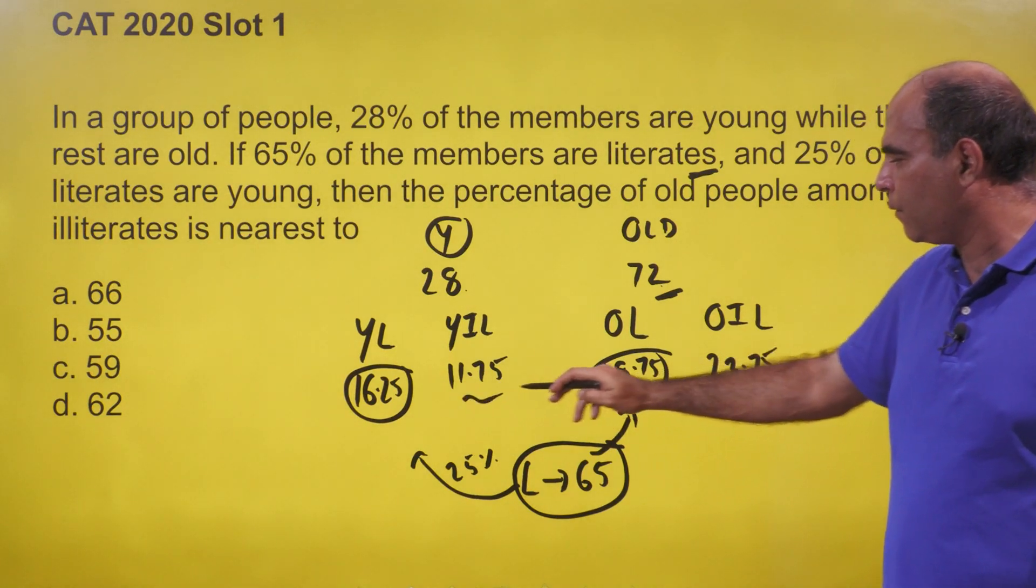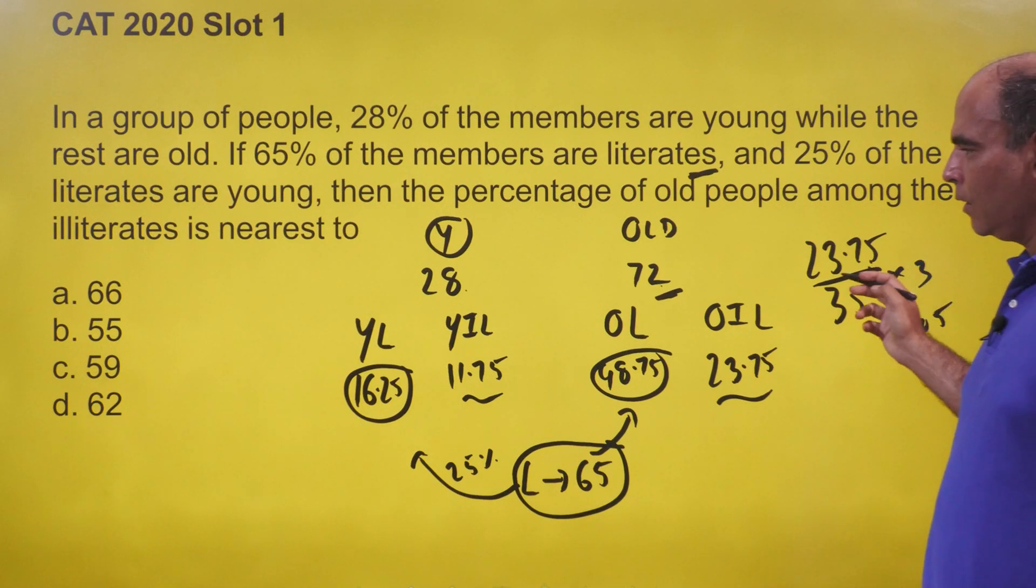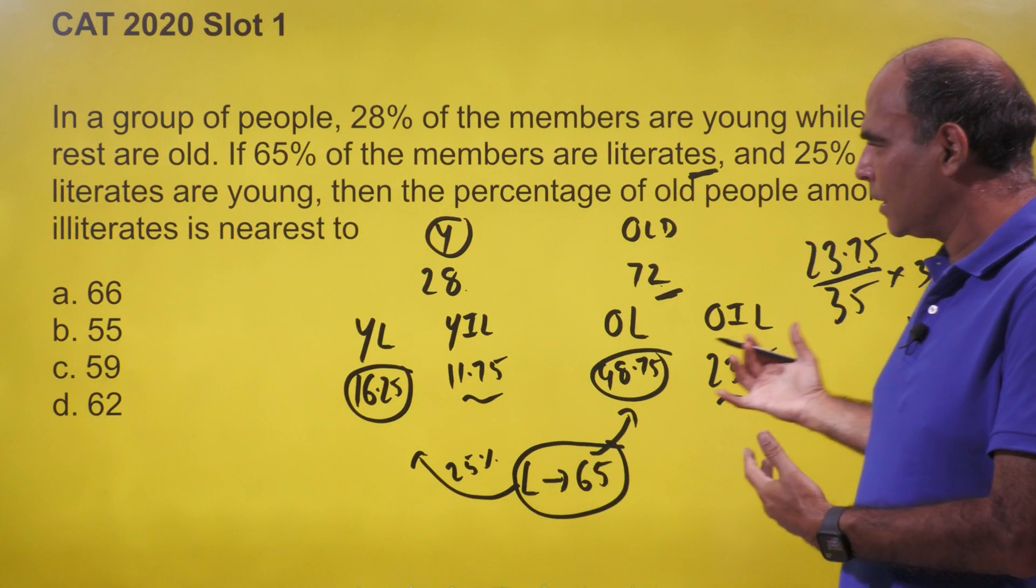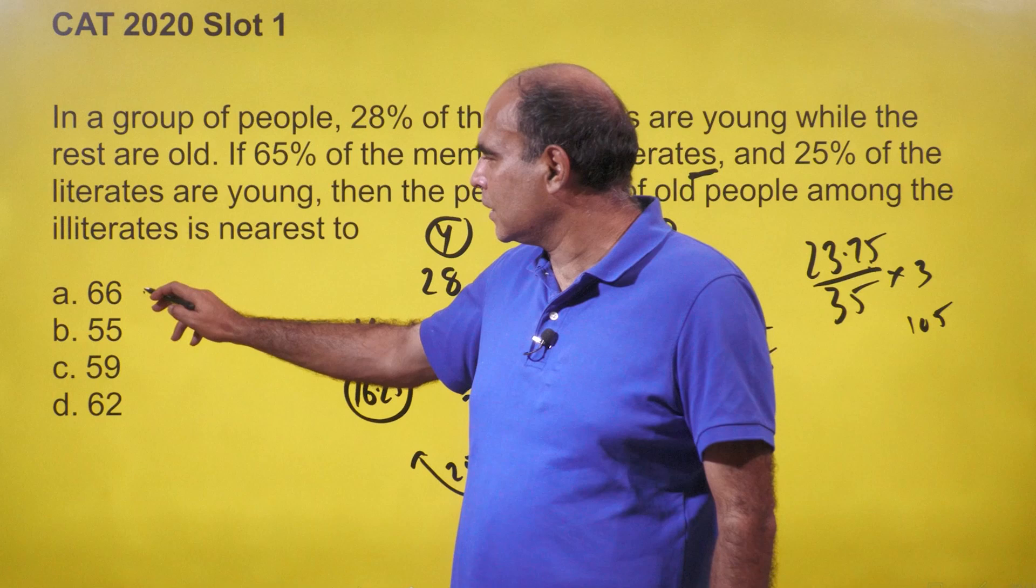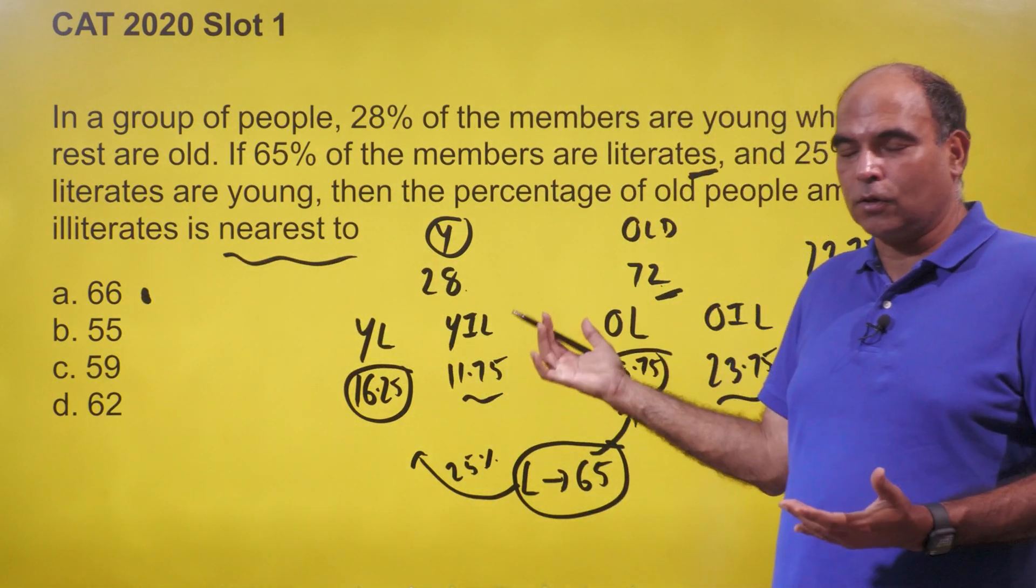And the old people is 23.75 on 35. But do a quick back of the hand calculation: into three will give me 105, and that will come to around 70, so around five percent less than that. Correct answer: 66. The question is not asking an exact answer, it's asking the nearest answer. And that's it, that's all.